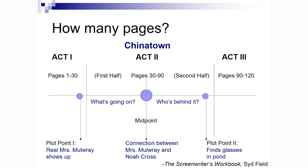How many pages? Chinatown is the example here — again from the Screenwriter's Workbook by Sid Field. We have act one, pages one through thirty, and you've got your first plot point where Mrs. Mulray shows up. Then pages thirty through sixty to the midpoint — the connection between Mrs. Mulray and Noah Cross. Then you've got plot point two, they find the glasses in the pond, and that leads you into act three.